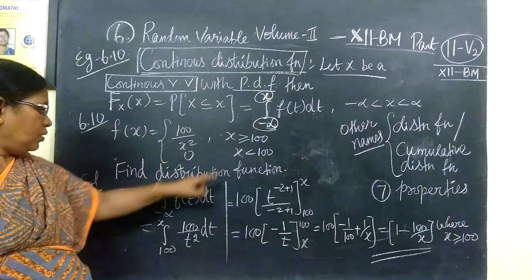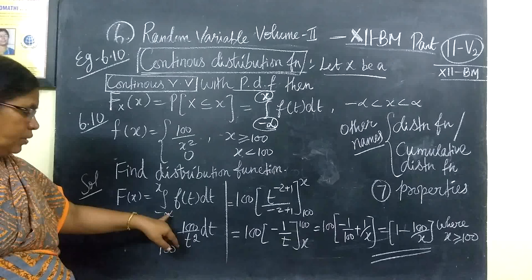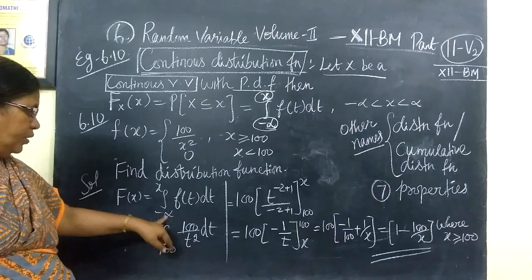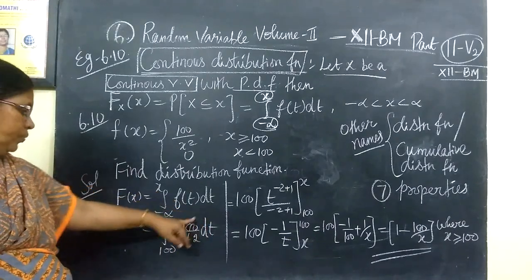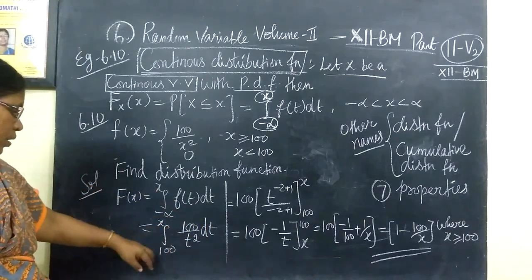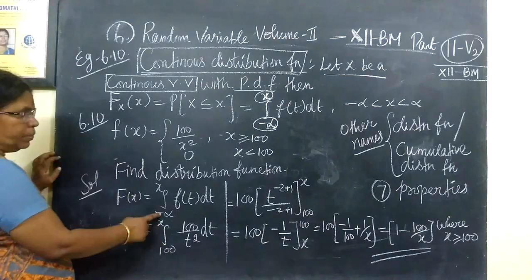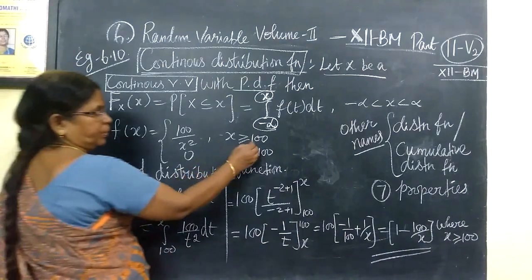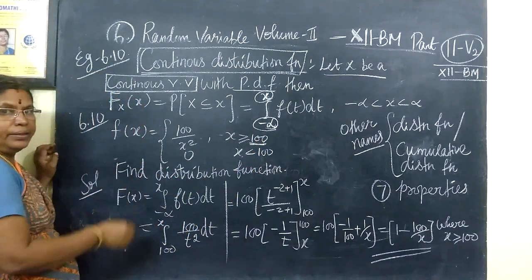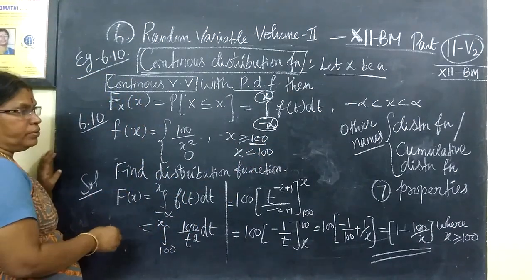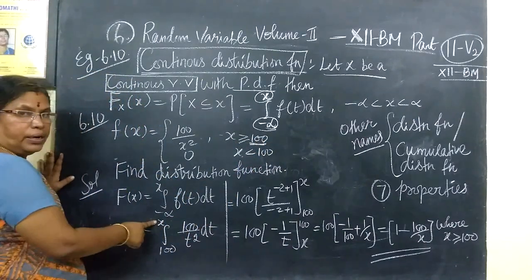The x value gives the integral from minus infinity to x of f(t) dt. Then the x value is equal to x. There is the x value equal to 100, and with the 100 value included, the upper limit will be equal to x.